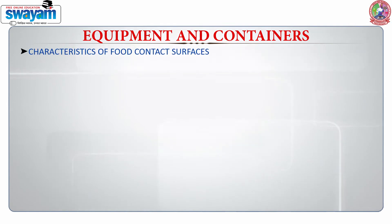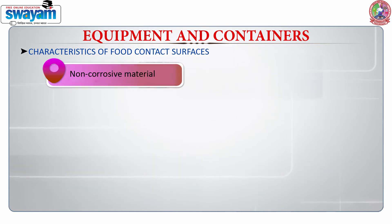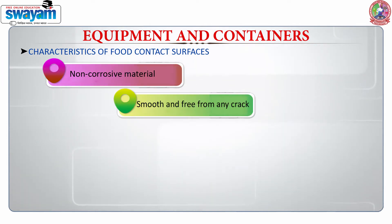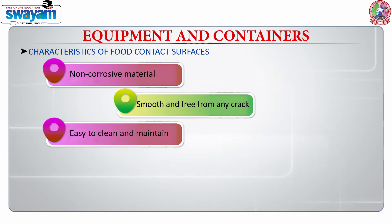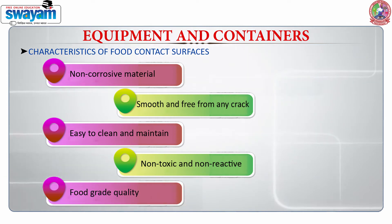Equipment and containers are very important — as you know, in food processing we use a large number of equipment at various stages. These are food contact surfaces and play a very important role in food safety. The requirements are that these are made of non-corrosive material which should be smooth and free from any cracks, easy to clean and maintain. We should also use non-toxic, non-reactive, and food-grade quality material in the manufacture of these equipment and containers.